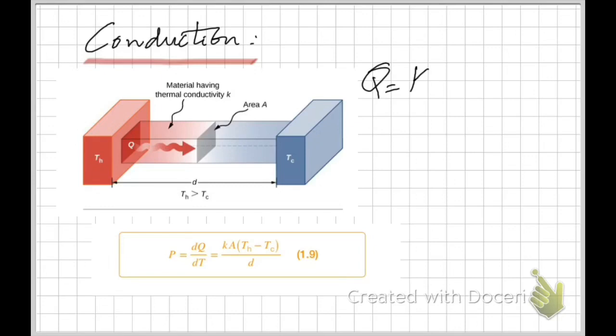Conduction is a process that usually takes place in solids. You can see one end of a rod here is hot — the temperature is Th. The other end is comparatively cold — the temperature is Tc. Th is greater than Tc, and heat slowly moves or is conducted from the hot end to the cold end. Conduction is a slow process.